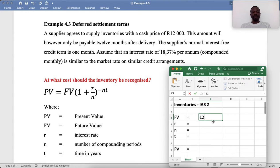Future value payable in 12 months is $12,000. The interest rate is 18.37%. The number of compounding - we are told it compounded monthly for 12 months. One year has got 12 months. Time T, the number of years, it's only payable after one year.